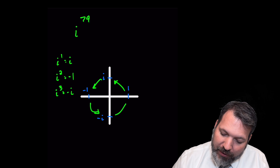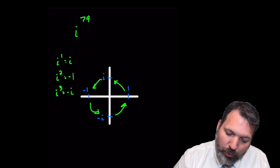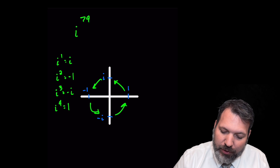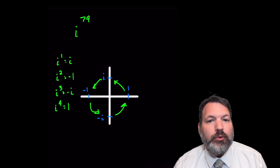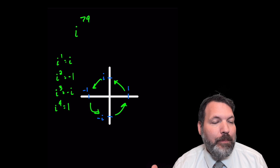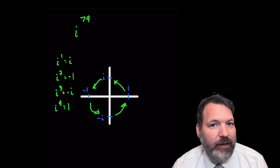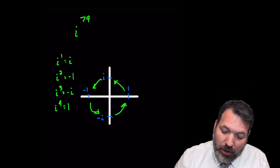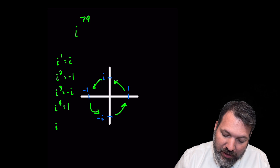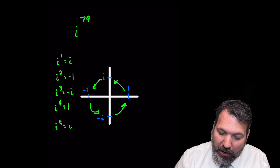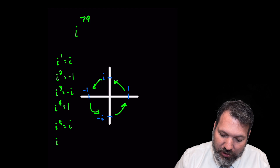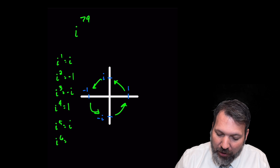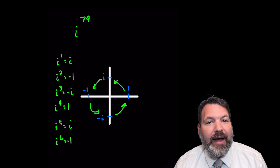Finally, as we multiply one more time, we get that i to the fourth is going to be equal to 1, and the important thing to recognize here is we're back where we started. So every subsequent power of i is just going to follow this same pattern.